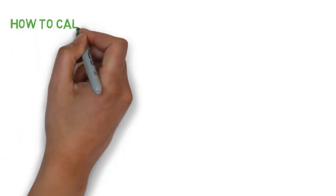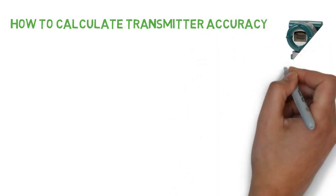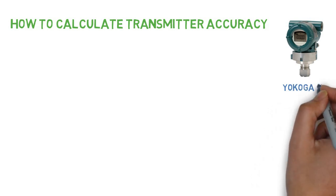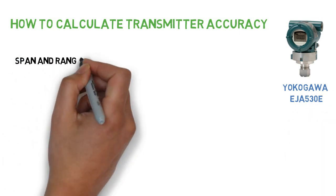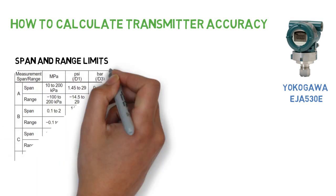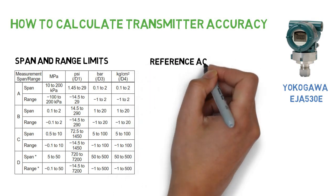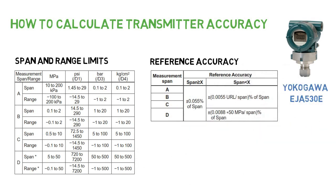How to calculate transmitter accuracy? Consider Yokogawa pressure transmitter of EJ530E model. Span and range limits of this model is given in below table. Reference accuracy of this model is given in below table. These tables can be found in the product catalog of this model.